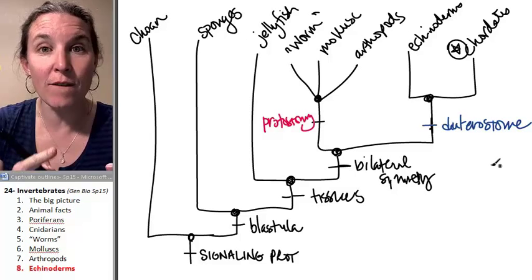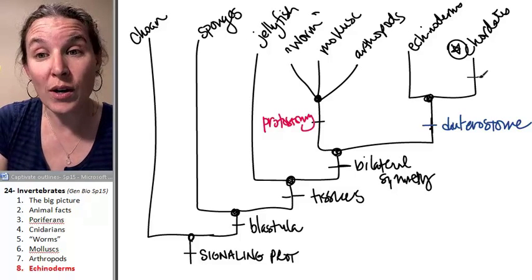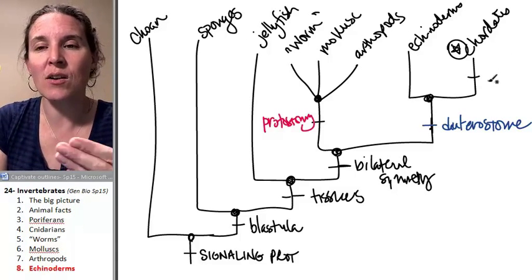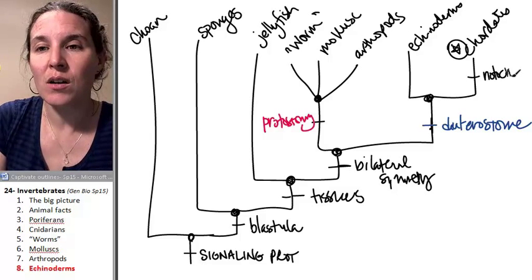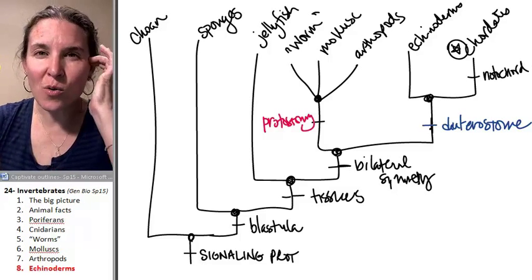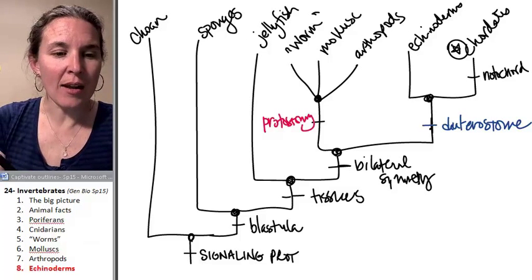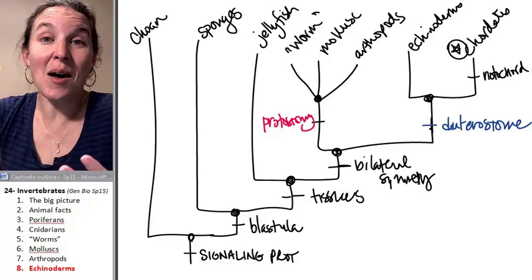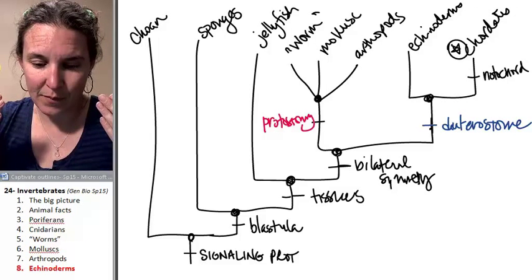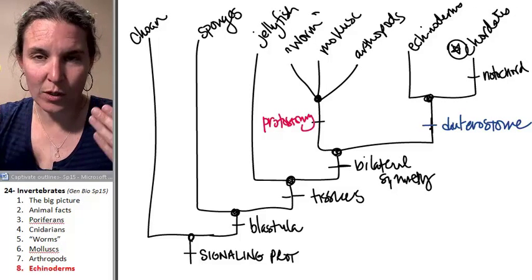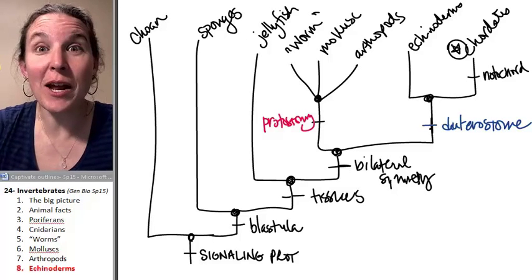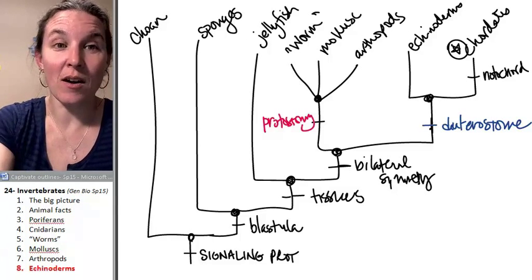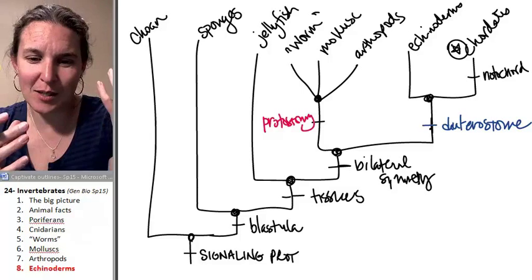Chordates include vertebrates. All chordates, at some stage in their life cycle, they have what's called a notochord. And the notochord is a structure that in some critters becomes the—I want to say vertebrae, but it's the spinal cord. I knew it was somewhere in there. It's embedded or it's protected by the vertebrae.